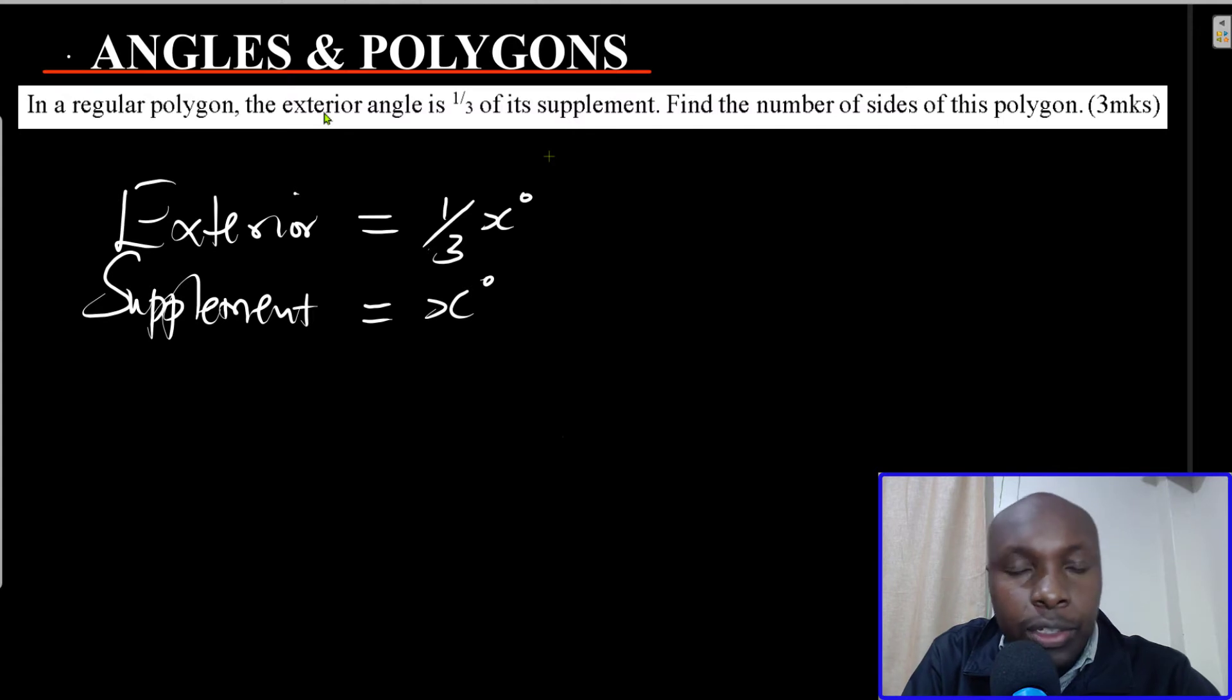Then another important thing that is supposed to know. Since you're told that the exterior angle is a third of its supplement, that means that these two angles are supplementary. Meaning if I add them, I should get a sum of 180.